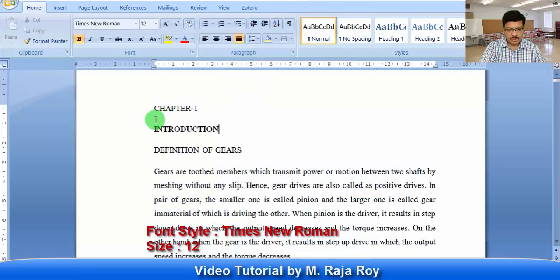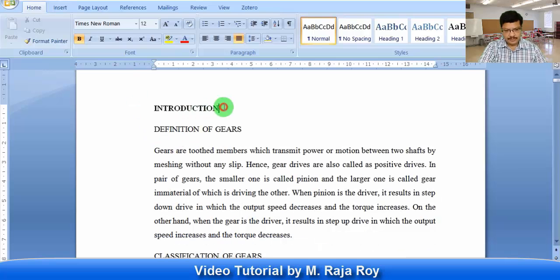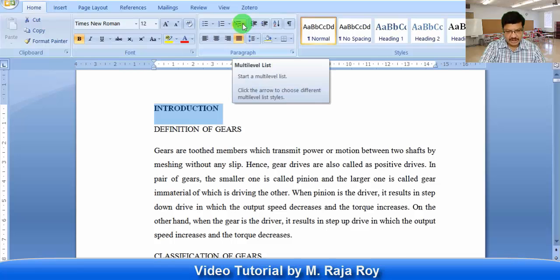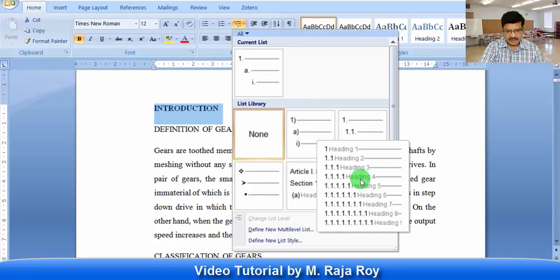After that, how to get this content number. For introduction you have to give the index number. For that you go to this multilevel list, then select this heading style. 1 will get for the main chapter name. 1.1 means paragraph number. 1.1.1 means that is sub-topic in that paragraph.